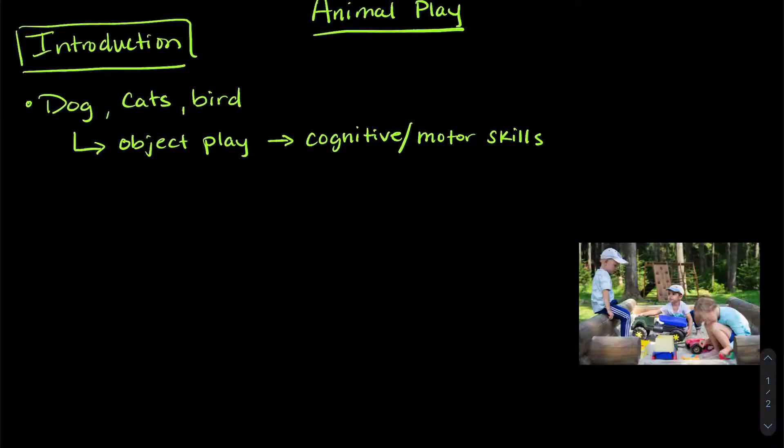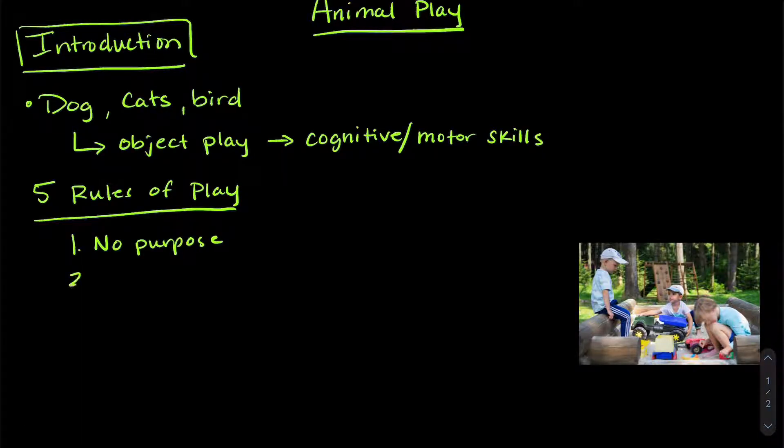There are five rules of play to help figure out if an animal or organism is actually playing, instead of doing something else. So the first rule is that there is no purpose to the behavior. The second rule is that it's free and natural.